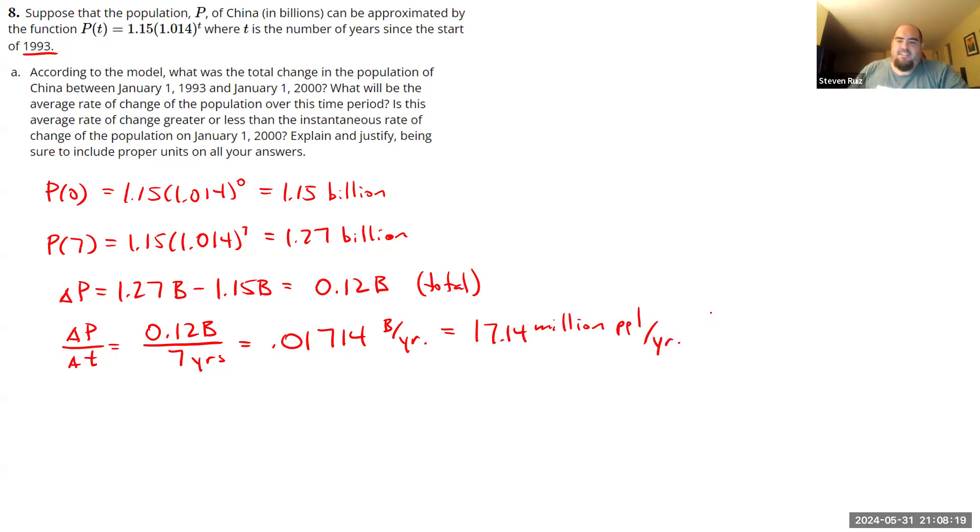So our first answer was a total change. This is going to be an average rate of change. So on average, population is growing by 17 million people per year, give or take.